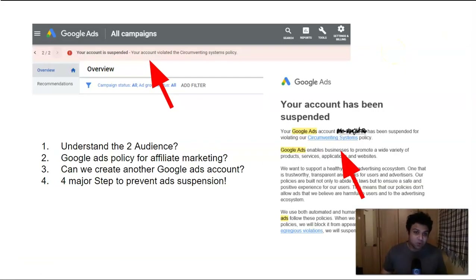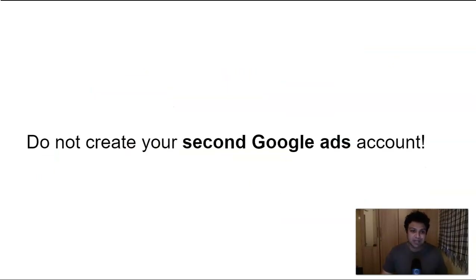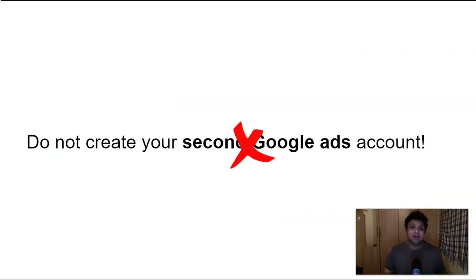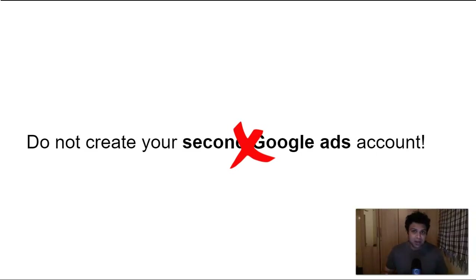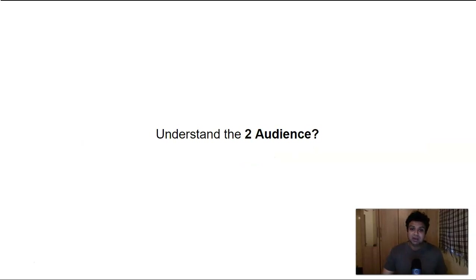The moment your account gets suspended, the first important thing you have to do right away is: do NOT try to create your second Google Ad account. If you create a second or third account, Google will shut that down too. There is a reason for that — let's understand it first.